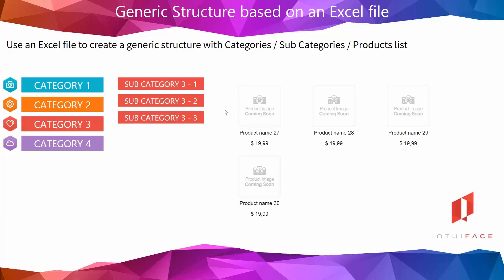Then if I click on a subcategory, these are my products — one, two, three. It goes into the first subcategory. Click on another — four, five, six, seven, eight, nine, ten, eleven, etc. You can click on other subcategories and it will display products corresponding to that subcategory. In eight minutes, with an Excel file that has one tab for level-one categories, one for level two, one for the whole product catalog, you can create this product browsing experience very easily using just a few bindings and a few triggers and actions.